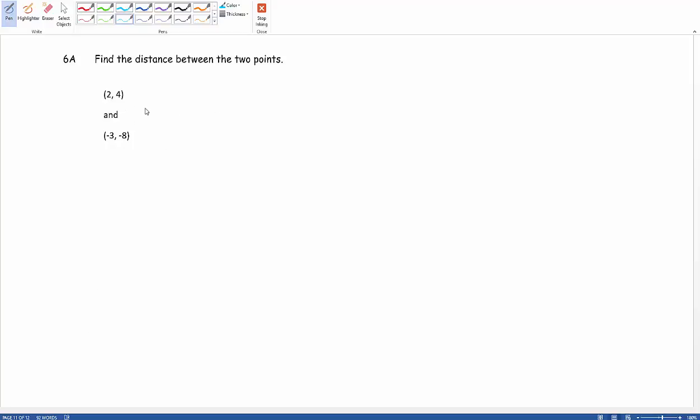Now just looking at these two points again, we're trying to find the distance between these two. And what we can go ahead and use is that distance formula. So our distance is going to be equal to the square root of x2 minus x1 squared plus y2 minus y1 squared.